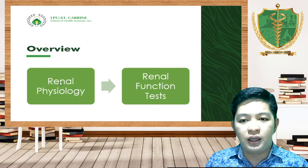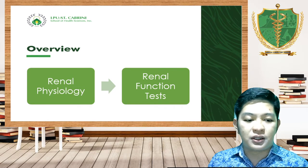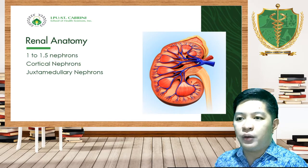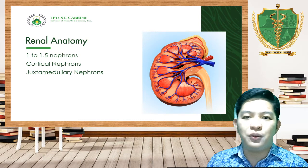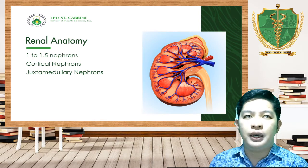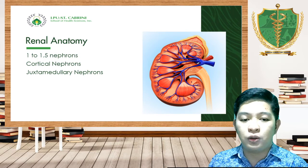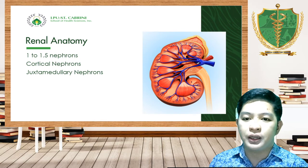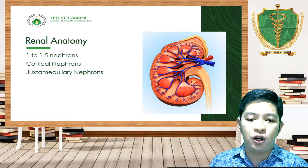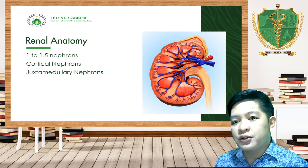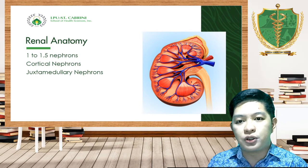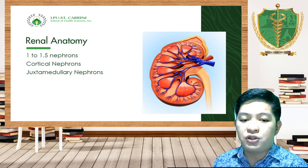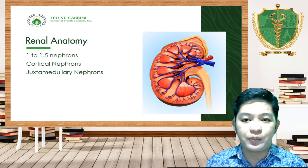Let's start with the renal anatomy. Our kidney is composed of 1 to 1.5 million nephrons, which are considered the functional units of the kidney. A normal individual has two kidneys, each consisting of 1.1 to 1.5 million nephrons. These nephrons are classified into two types: cortical nephrons, which are responsible for the removal of waste products and reabsorption of filtered substances or nutrients, and juxtaglomerular nephrons, which are responsible for urine concentration and lie in the medullary part.